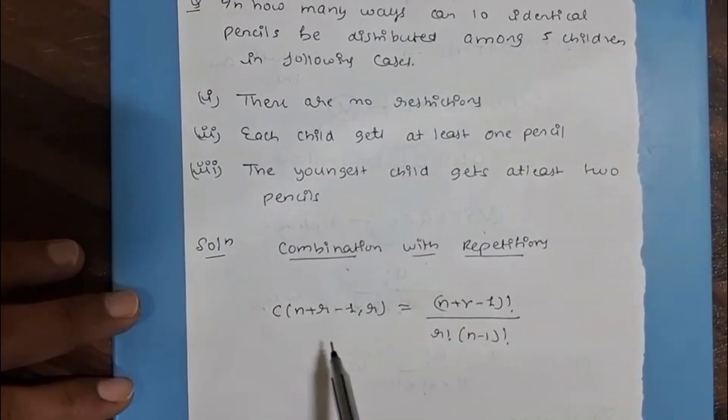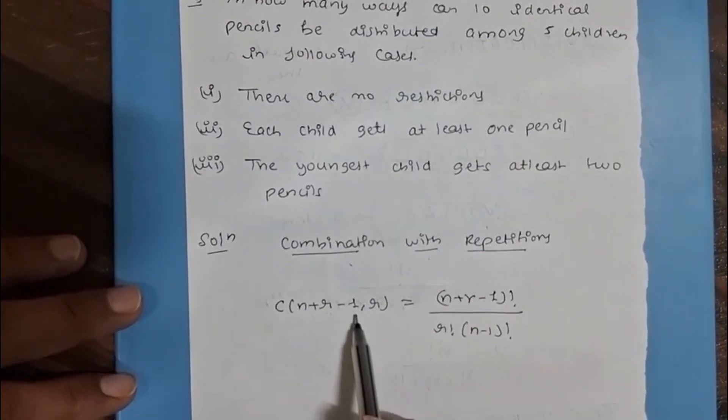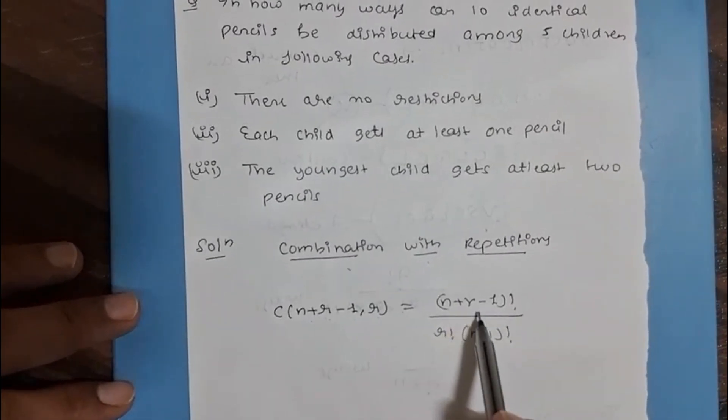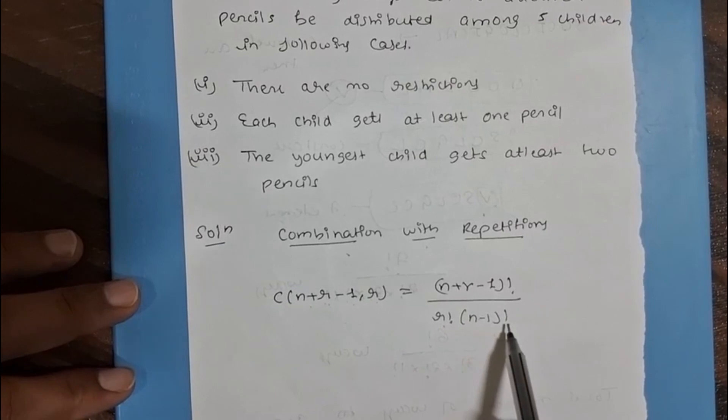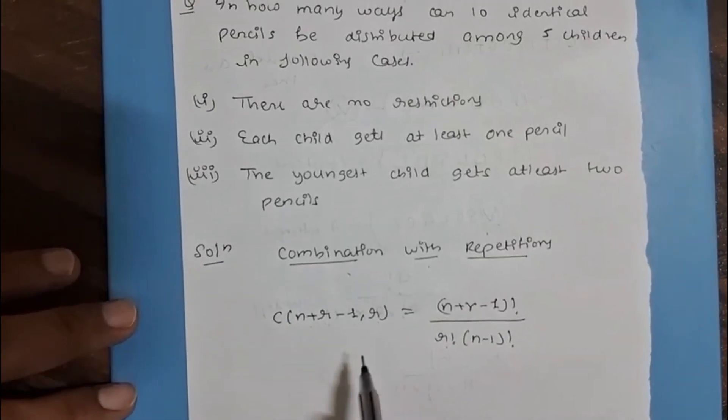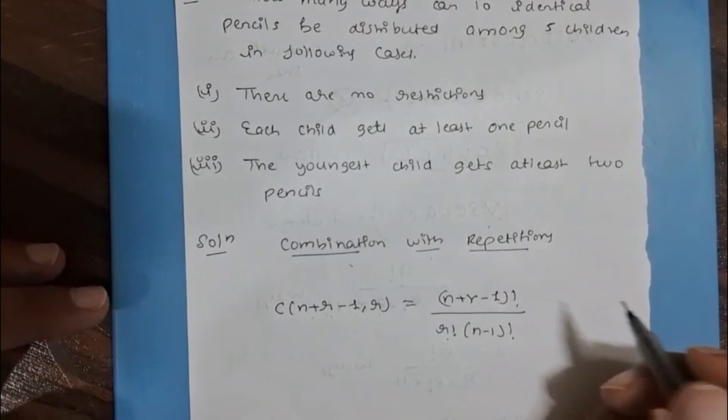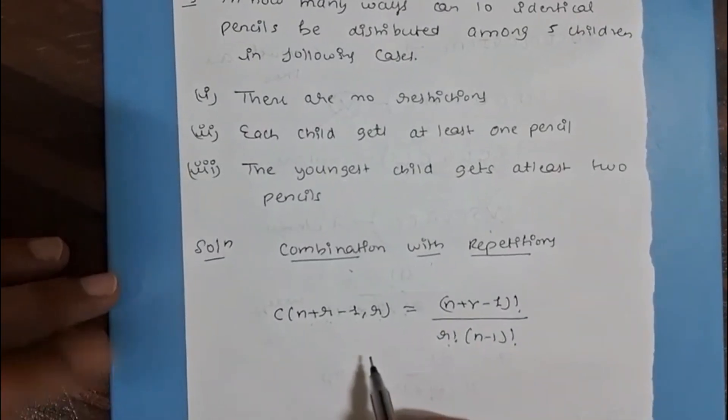The formula is C(n+r-1, r) = (n+r-1)! / (r! × (n-1)!). Here, n is the number of distinct elements given and r is the number of repetitions.